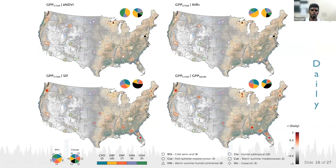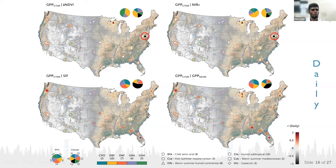For daily bins, we analyzed kNDVI, NIRv, and SIF at different proxies. Unfortunately, we couldn't properly establish a good relation with different proxies except for SIF, which closely replicated NEON. Neither kNDVI nor NIRv could replicate the observations, and some sites showed negative correlation — particularly one deciduous broadleaf site where we are still puzzled by the poor relation and are analyzing its environmental background. Another deciduous broadleaf site showed comparatively higher correlation with both CTSM and observations.